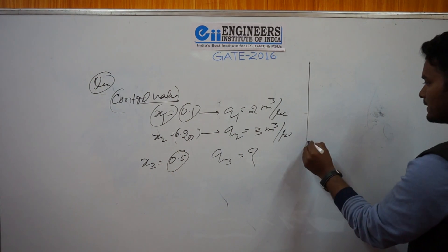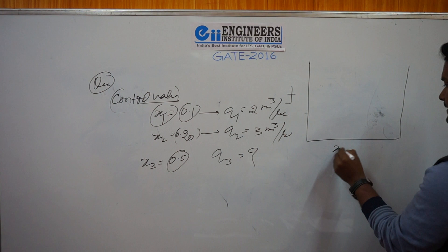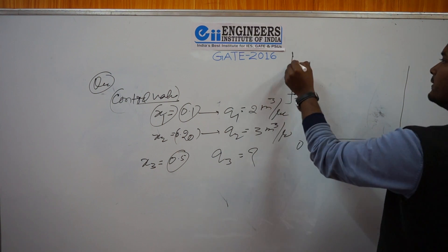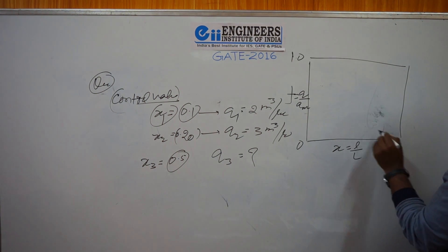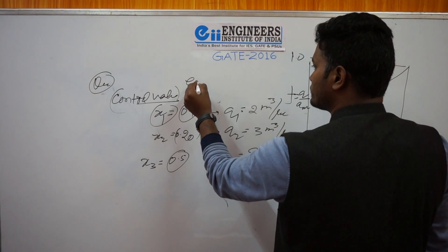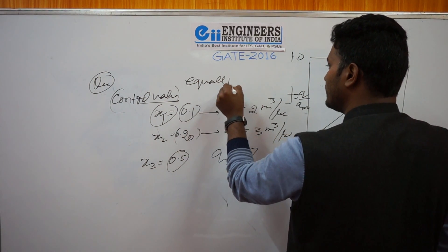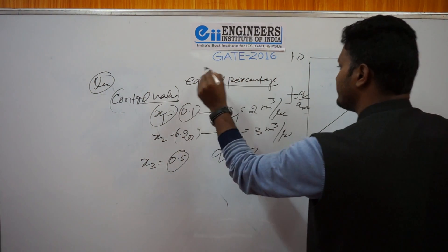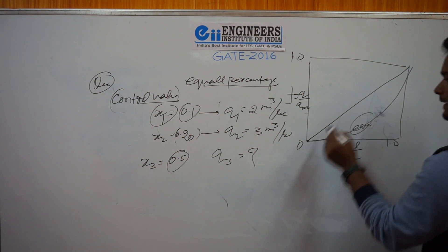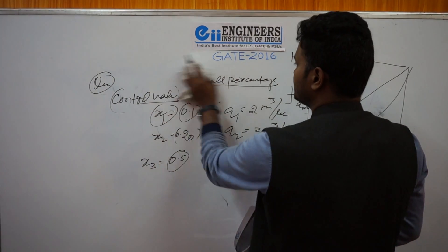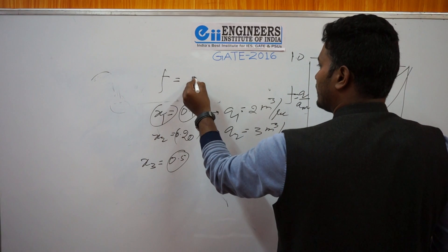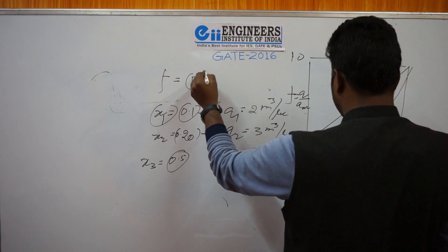The characteristics of the control valve are f versus x, where f equals q upon q_max, and x equals l/L, both ranging from 0 to 1. There are different types of control valves. This problem involves the equal percentage valve. For equal percentage type, the relationship between f and x is: f equals r to the power (x minus 1), where r is called the turn-down ratio and f equals q upon q_max.